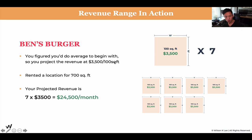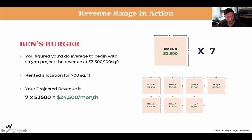Use a baseline of what you think is an average of what you can make — we selected $3,500. You can select $3,000, $2,500, or $4,000; it doesn't really matter. This is a rough idea of how much you think you can achieve from that location per 100 square feet. So depending on the size of your location, you use the size times this rate to get the projected revenue per month. $3,500 per 100 square feet — now you have seven of these boxes: one, two, three, four, five, six, seven — this is 700 square feet. You add up all these numbers and it equals $24,500 per month. That's your projected revenue per month if you were running Ben's Burger at $3,500 per 100 square feet.